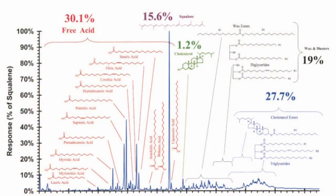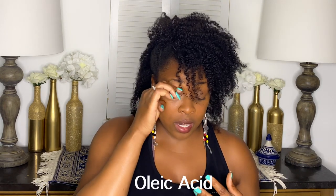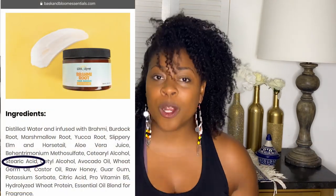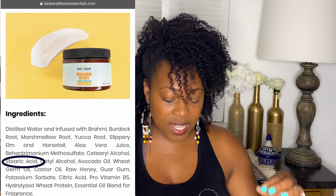The fatty acids found in our hair are actually short carbon fatty acids between 16 to 18 carbons — palmitic acid, myristic acid, lauric acid, linoleic acid, oleic acid, stearic acid, just to name a few. You might have seen these names on the back of certain hair products. These are the acids we want to look for in our oils.